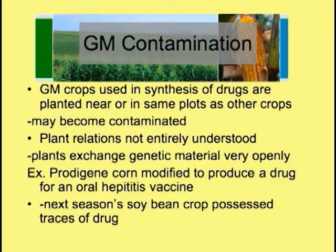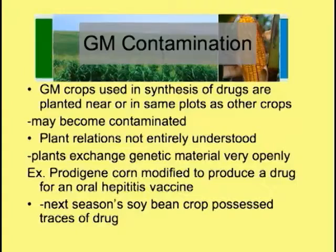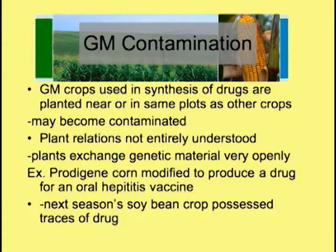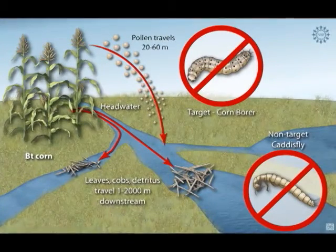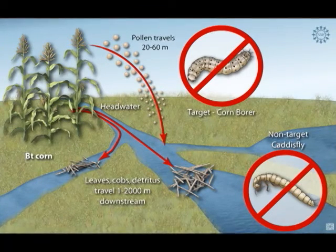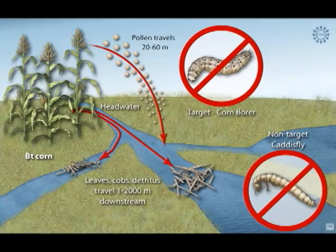Genetically modified crops used in the synthesis of drugs are planted near or in the same plots as other crops. As a result, those other crops may become contaminated. Plant relations are not entirely understood, as plants exchange genetic material very openly. For example, ProdiGene corn modified to produce a drug for an oral hepatitis vaccine — the next season's soybean crop possesses traces of that drug. When Bt corn is planted, the pollen travels into the surrounding environment carrying the bacterium Bt with it. This can kill the targeted species as well as non-targeted species.